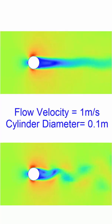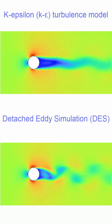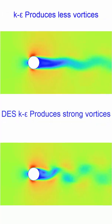These animations show the velocity contours of a transient flow over a cylinder from a 2D CFD analysis. Two turbulence models were used in the simulation: the K-Epsilon model and the Detached Eddy Simulation model, DES.